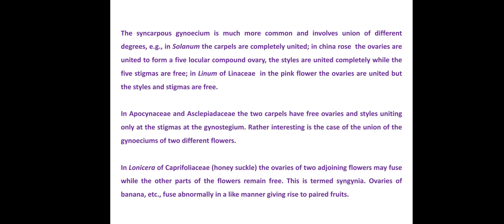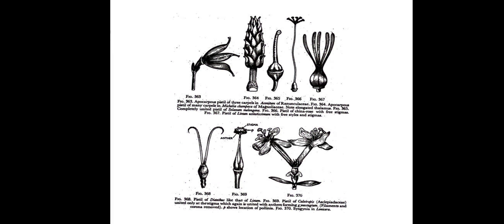The diagrams show different conditions of apocarpous and syncarpous ovaries. In the upper diagrams showing apocarpous condition, each carpel is separate. In the syncarpous conditions below: ovaries united with stigmas united; ovaries united with styles united but stigmas free; ovaries united with styles free and stigmas free; and ovaries united with stigmas free. These are the different conditions diagrammatically represented for apocarpous and syncarpous ovaries.